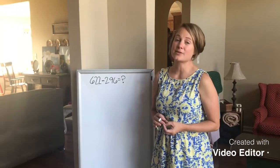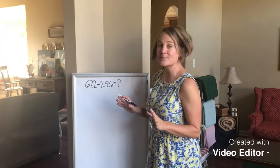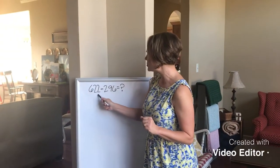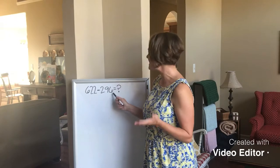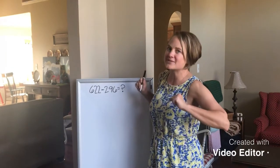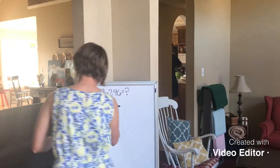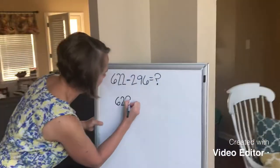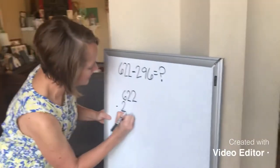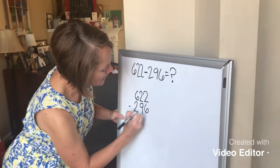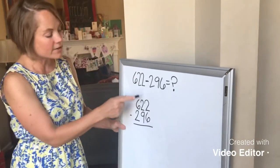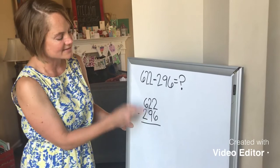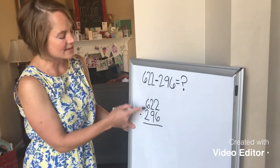Now we're going to use the standard algorithm to subtract. And here's my equation. 622 minus 296 equals... We're about to find out. But first, let's write the problem vertically. 622 minus 296. And once again, you can see that I was very careful to line up my 1s, and my 10s, and my 100s.